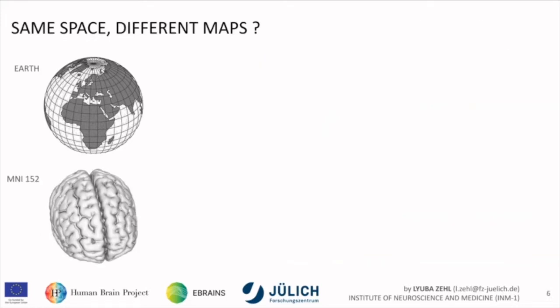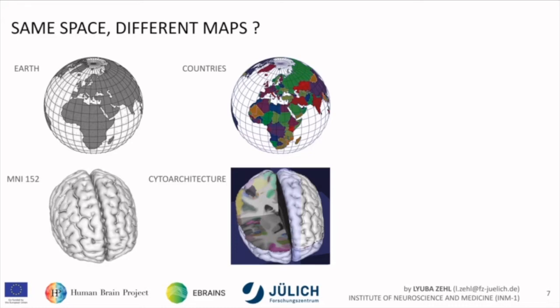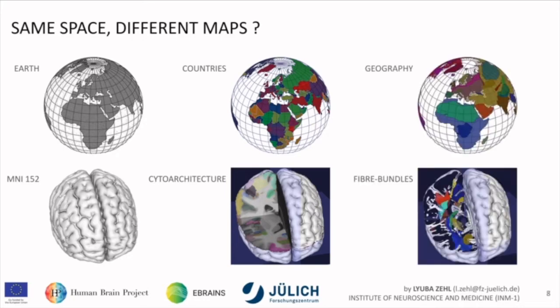Can we have one space and different maps or different atlases in one space? Of course we can. For the Earth we can have countries, and for the brain we could have cytoarchitectonic areas delineated. We can also do it on geographical features for the Earth and on fiber bundles for the brain. We can have different atlases in one space, and this is what the HBP atlases are about — providing a set of spaces and combining different atlases in the same space to make relations between them.